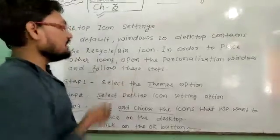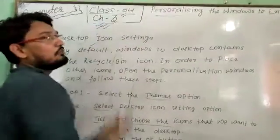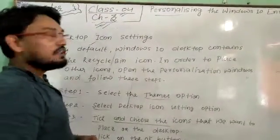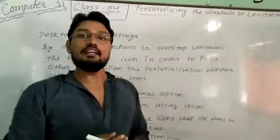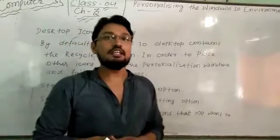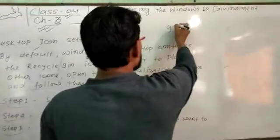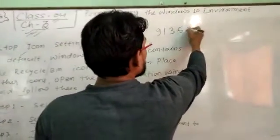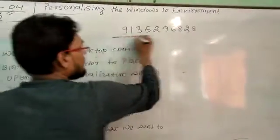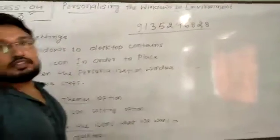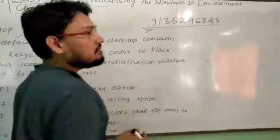This is the final topic of chapter number 3 of class 4. Students, study these topics carefully. If you have any confusion understanding this chapter, you can call my number: 9105-296828. I will try to solve your confusion and solve your problem. Thank you.